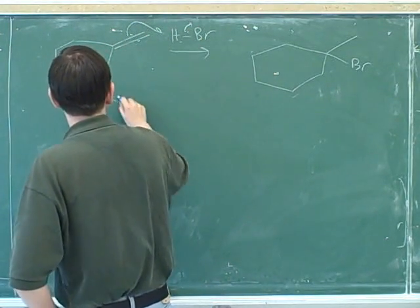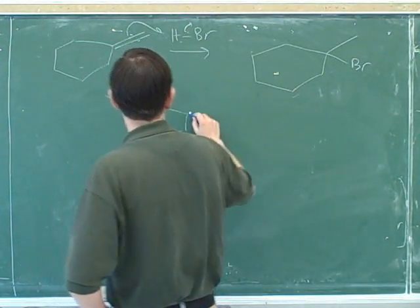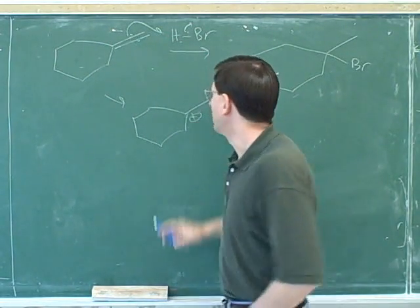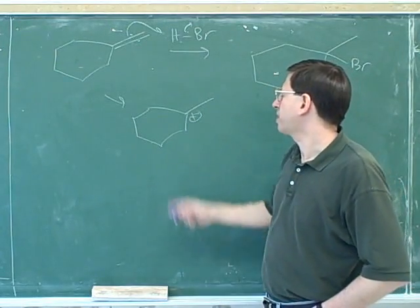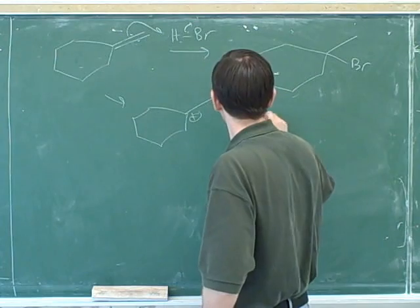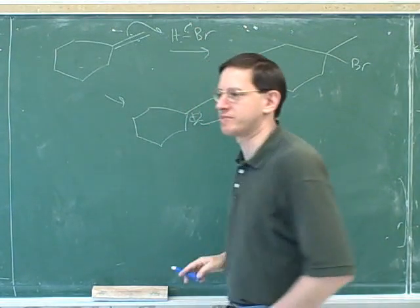The hydrogen attacks first. The hydrogen attacks first, because it's the electrophile. Well, the hydrogen is going, we're going to have to put the positive charge on this more substituted carbon. And then when the bromine comes in, it will end up on the less substituted carbon.